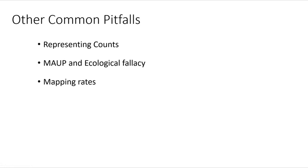This is part two of the common pitfalls associated with map making and this one is really awesome. We're going to be talking about standardizing or normalizing data and also the ecological fallacy and the modifiable aerial unit problem.